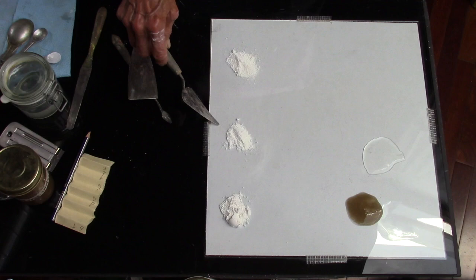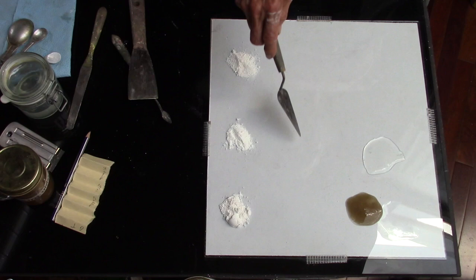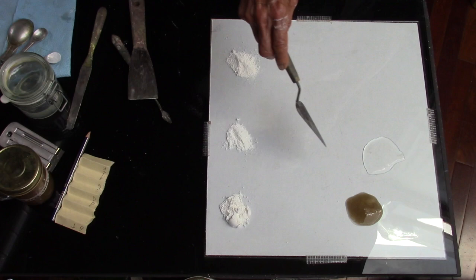Here are three white pigments: titanium white, zinc white, and calcium carbonate. I'm going to make pastels with gum tragacanth solution, and then I'm going to make the same colors with methylcellulose solution.